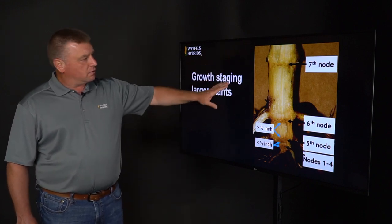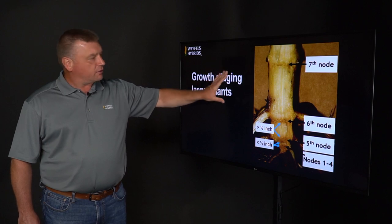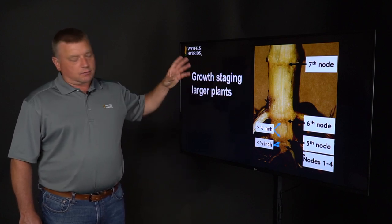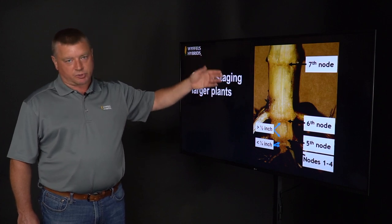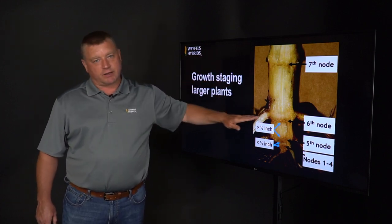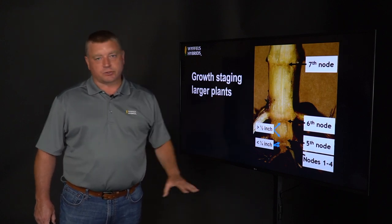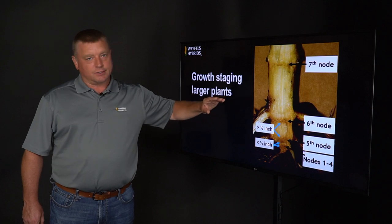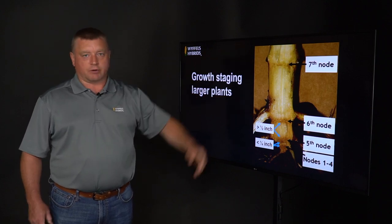If you need a quick method to determine leaf staging without having to dig up and split the plants, just find the roots that are at the soil surface. If you find those roots, generally that is your sixth node, and you can count from there.